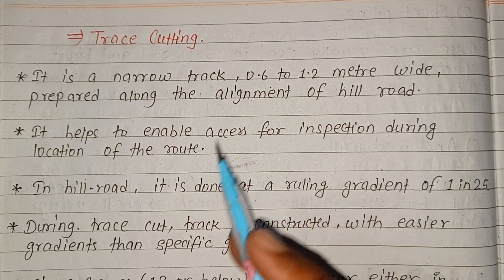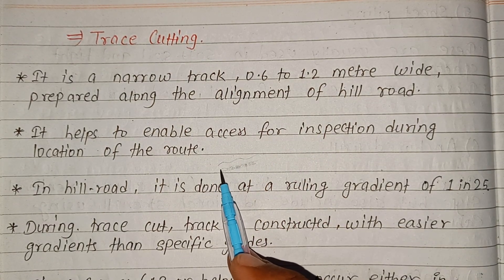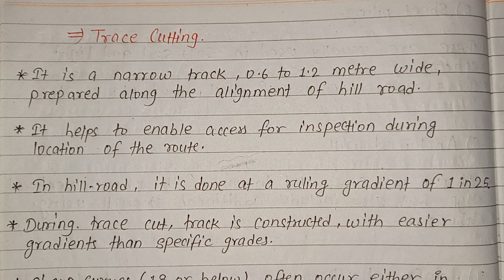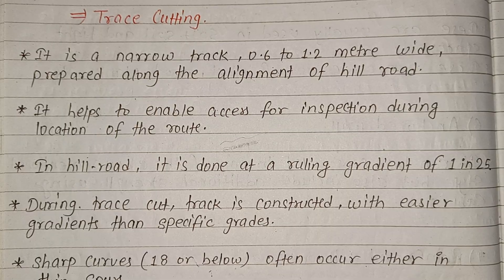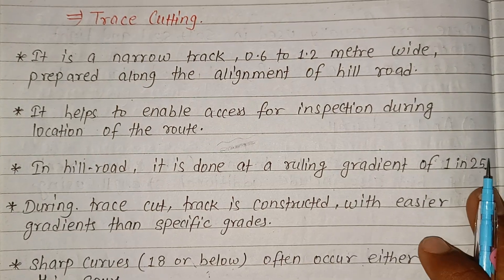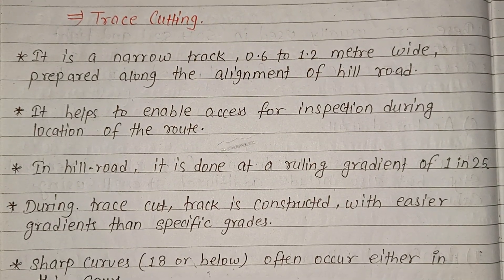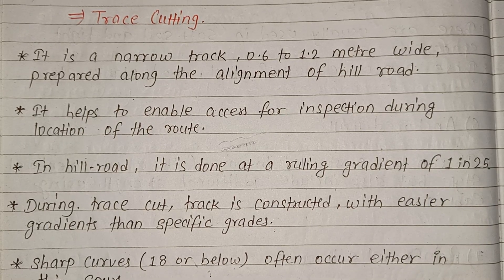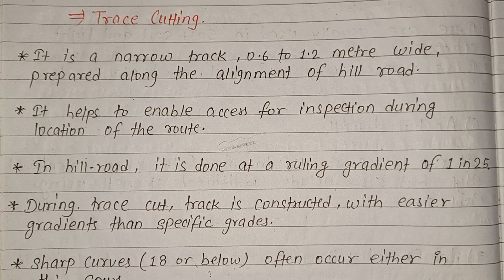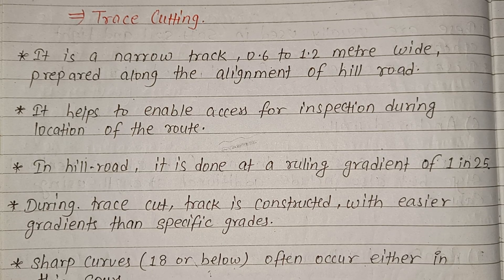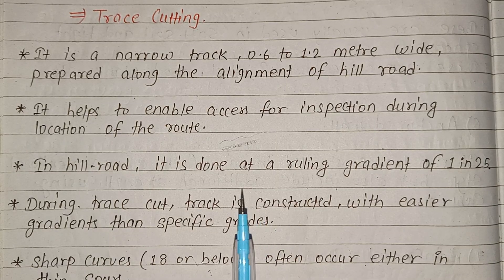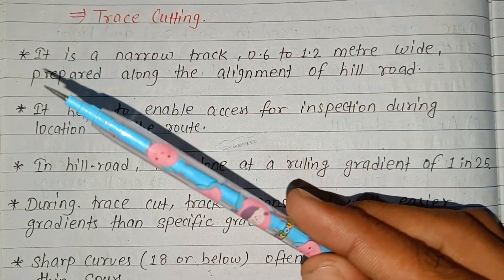If you need to do the route inspection, you need to do the trace cut to provide access to the road. It is done at a ruling gradient of 1 in 25 — this is the slope. The trace cut will be used to construct with easier gradients than specific gradients.